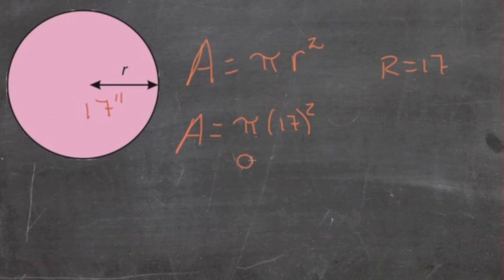We get 907.92 approximately. That's the area of this circle in square inches.